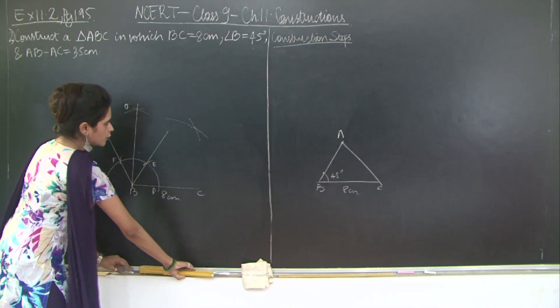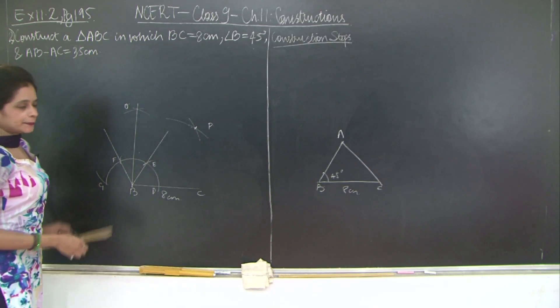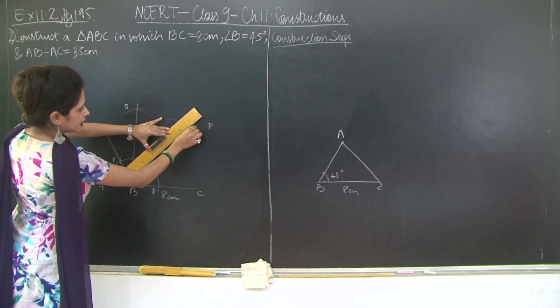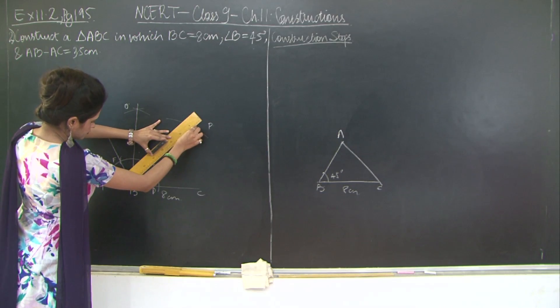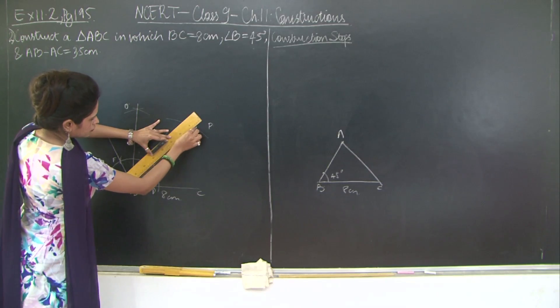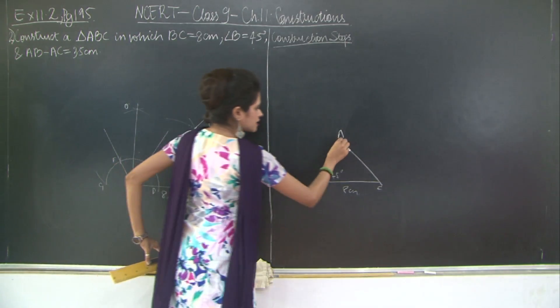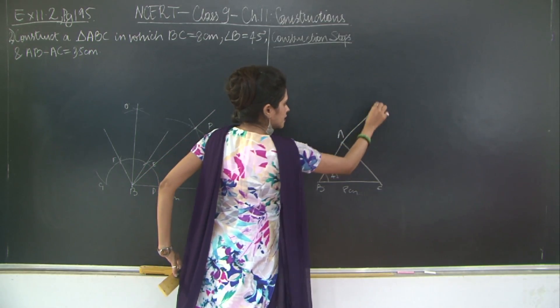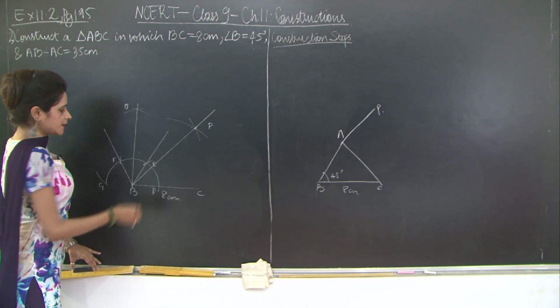And I'll call this point of intersection as P and join BP. So PBE, angle PBE, would be 45 degrees. So what is happening here is I have PBE as PBC as 45 degrees, this angle out here.